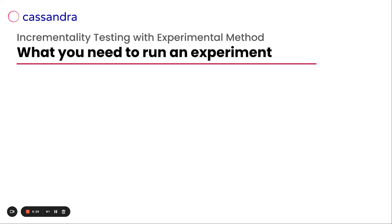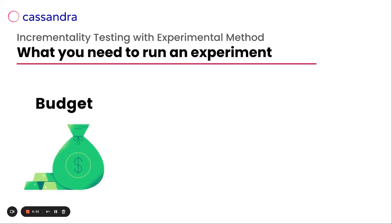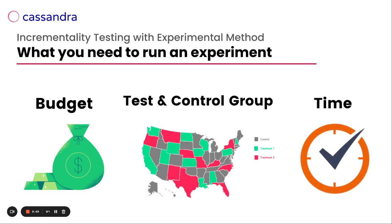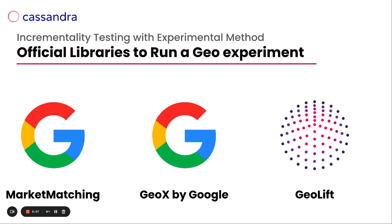To run an incrementality testing experiment, we need to know how much budget to allocate, which groups are control and test, and how long to run the experiment. For geo experiments specifically — the most accurate and manageable experimental method — we can use three different official open-source libraries from Google and Meta: Market Matching, GeoX, and GeoLift by Meta.